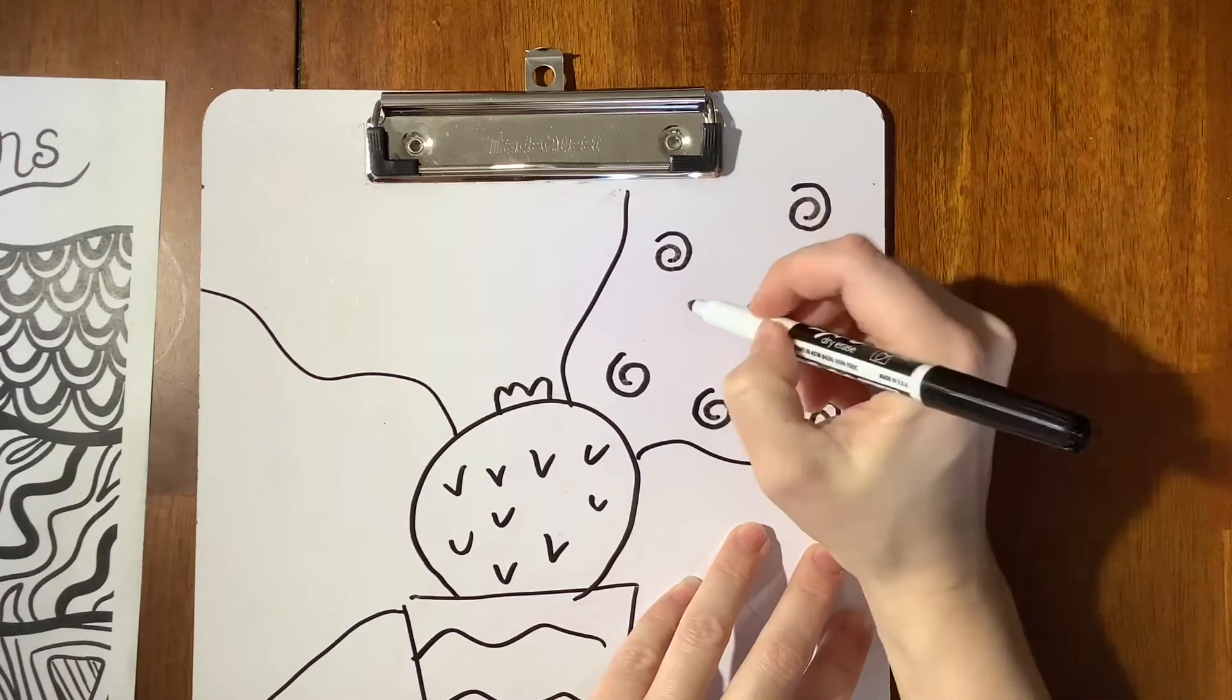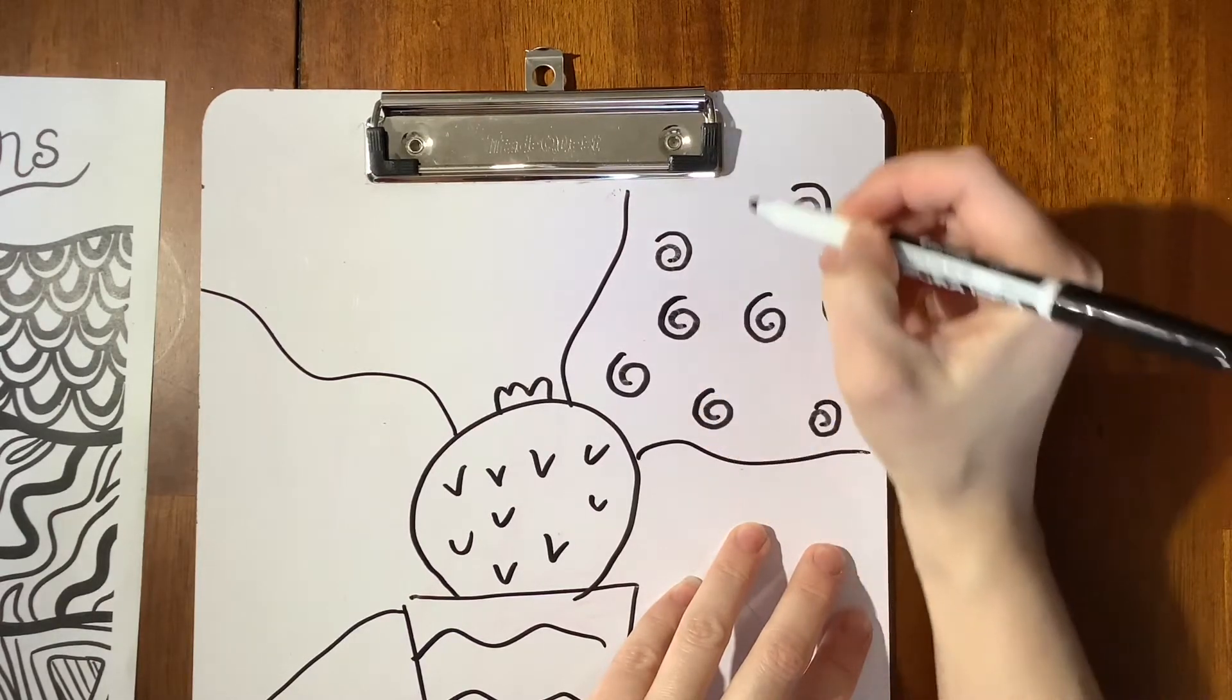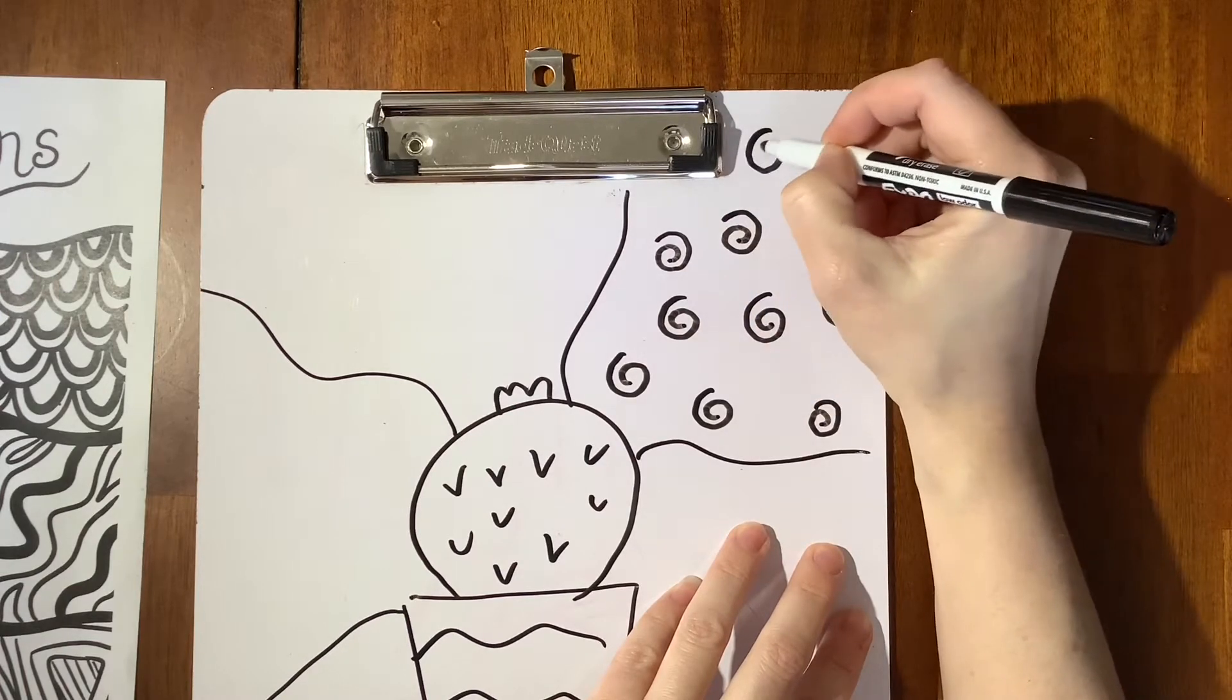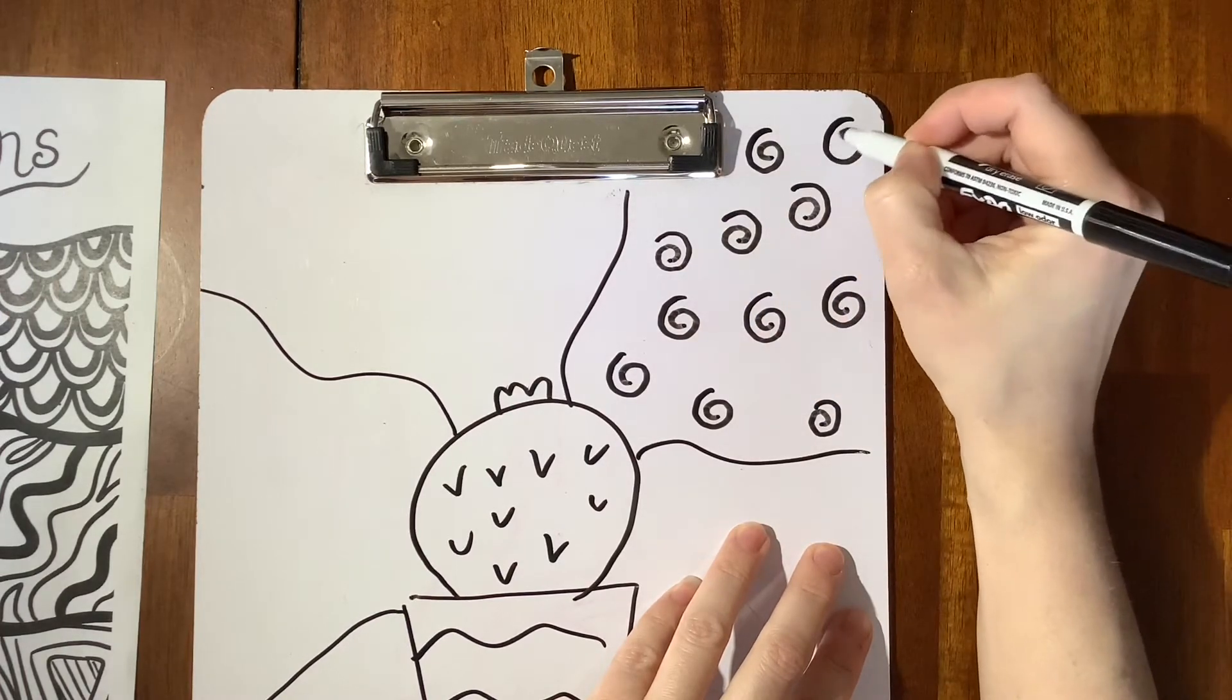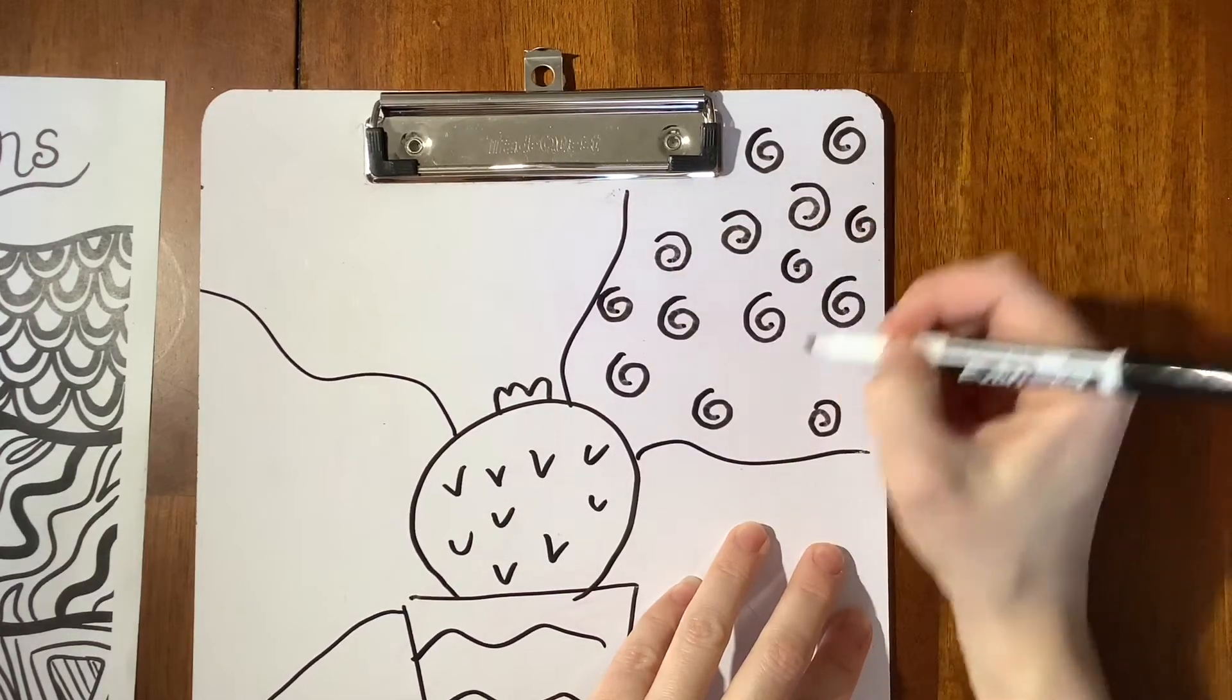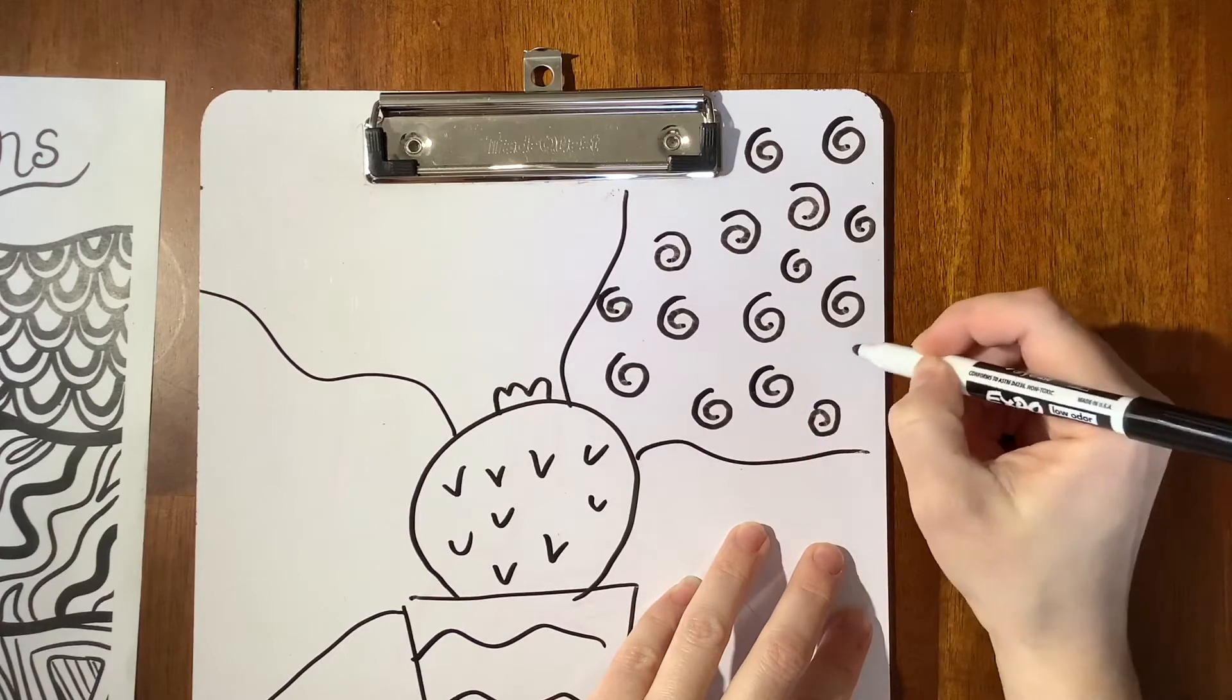You don't want to make too little because then you have a lot of work ahead of you with coloring in a lot of spaces. So you can even make some of the swirls smaller, some bigger.